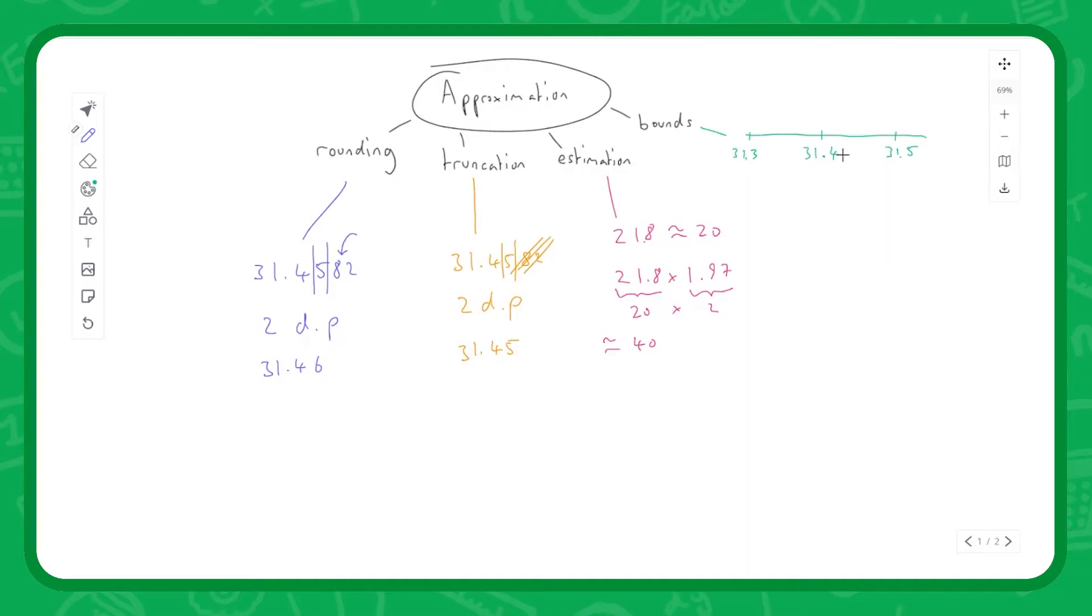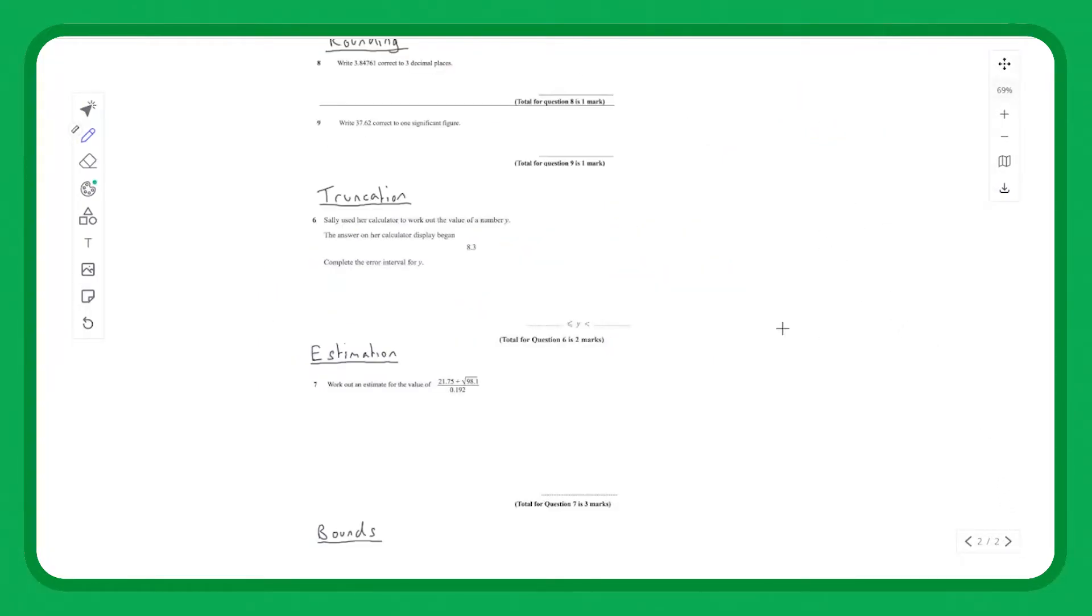Well in reality, that plank of wood could be anywhere down to halfway between these two numbers, and it could be anywhere up to halfway between these two numbers. So my actual range of possible values is going to be that interval there. You'll see in a second when we do an example - that's what we have to deal with when we're doing bounds. So let's jump into some past paper questions.